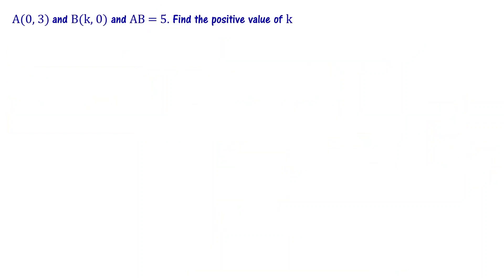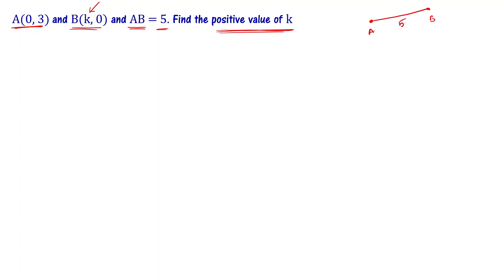A is a point at (0,3) and B is another point at (k,0). The length of line segment AB, that is the distance between points A and B, is equal to 5. We are asked to find the positive value of k, meaning we have to give only the positive value answer. We know the distance between the two points and we want to find the value of k using the distance formula.